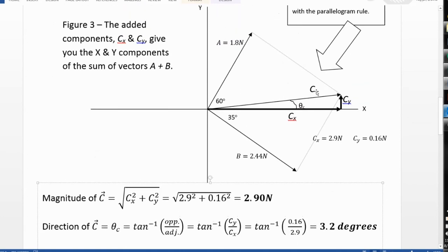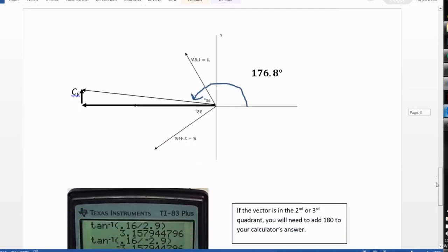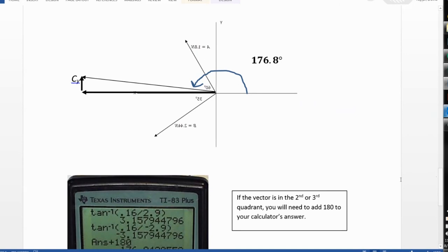What if, however, when I had these vectors, let's assume that vector A pointed into the second quadrant and vector B pointed into the third quadrant? In other words, it would look something like this. Now, my x component is to the left. My y component is still positive, but my x component is to the left.